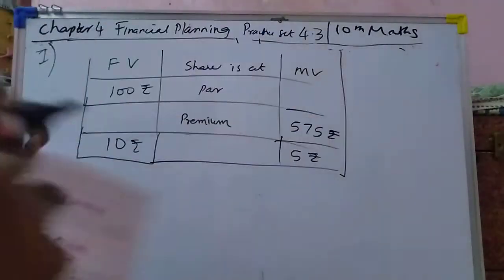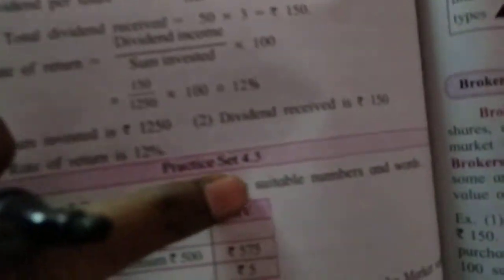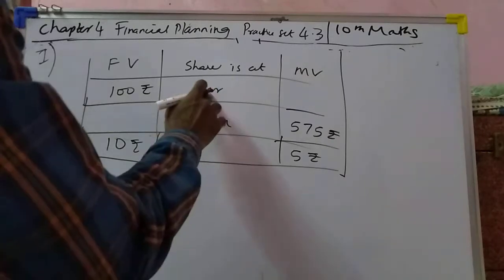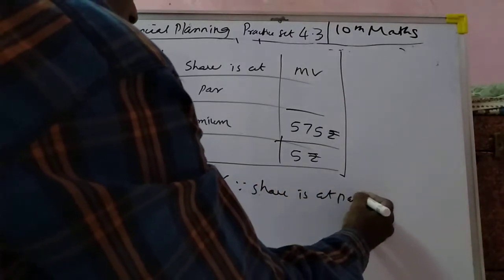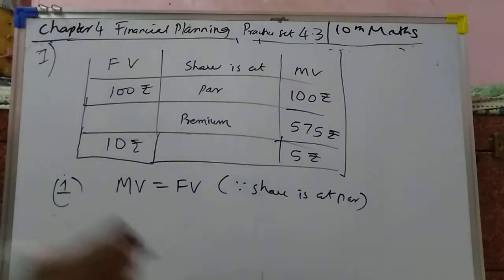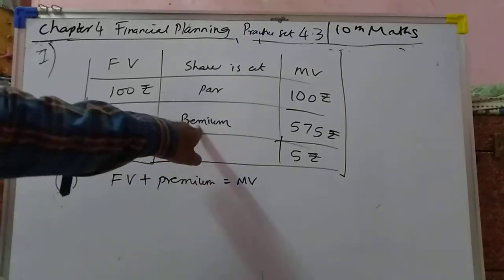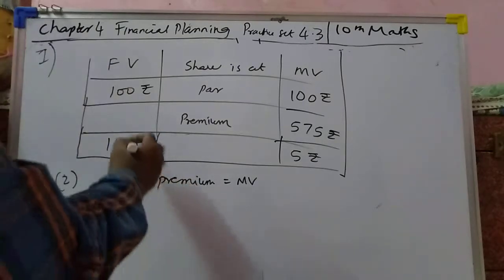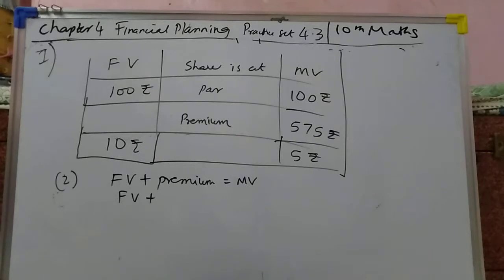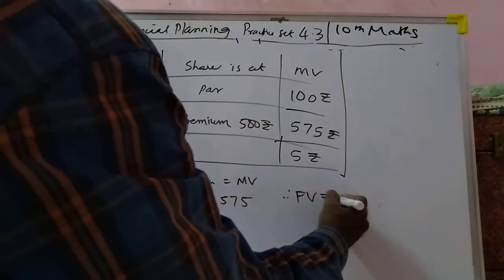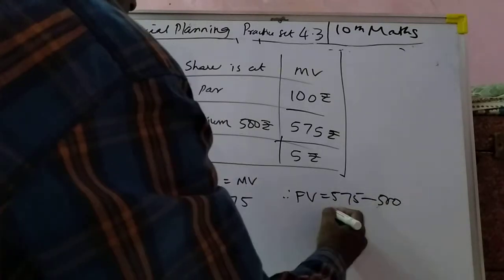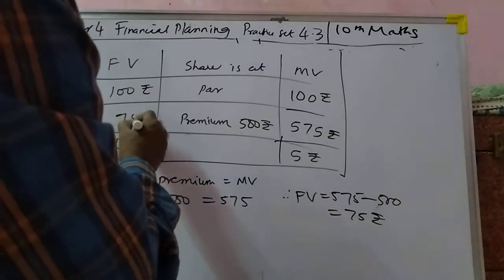Students, we are learning mathematics part 1, standard 10, chapter 4: Financial Planning, 4.3, page number 102, first problem. Here, the first share is at par, so MV is equal to FV. Since share is at par, the same answer will come. For premium, the formula is FV plus premium. Premium is given as 500 rupees, so 500 equals 575, therefore FV equals 575 minus 500, which is 75 rupees. FV means face value.